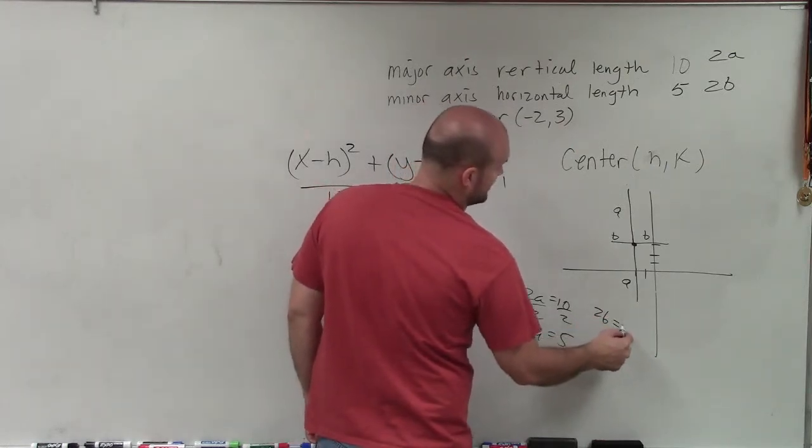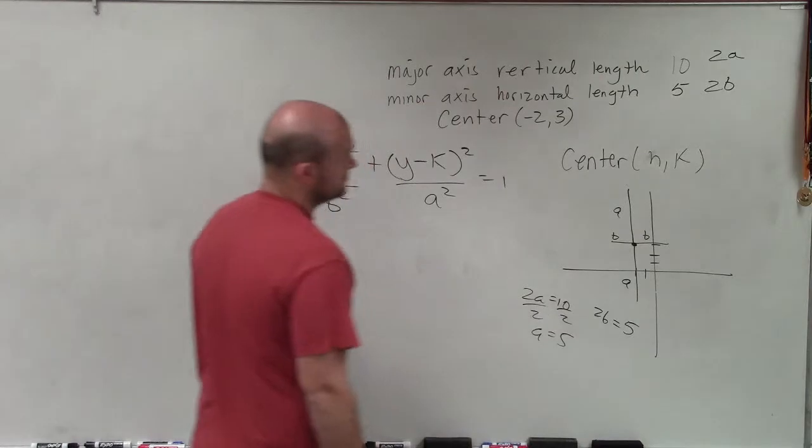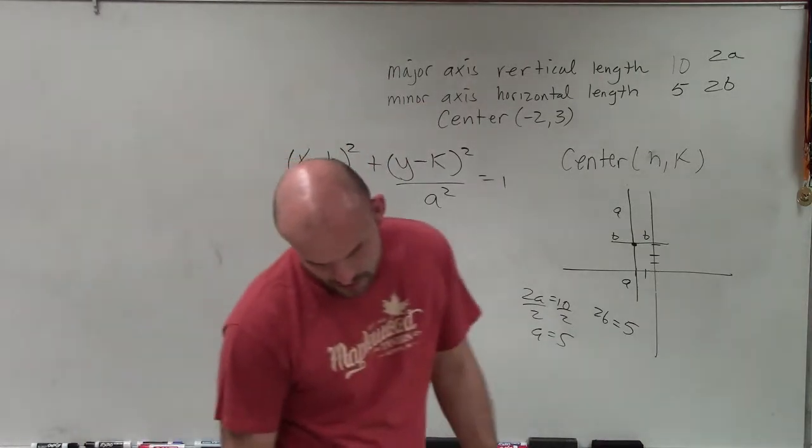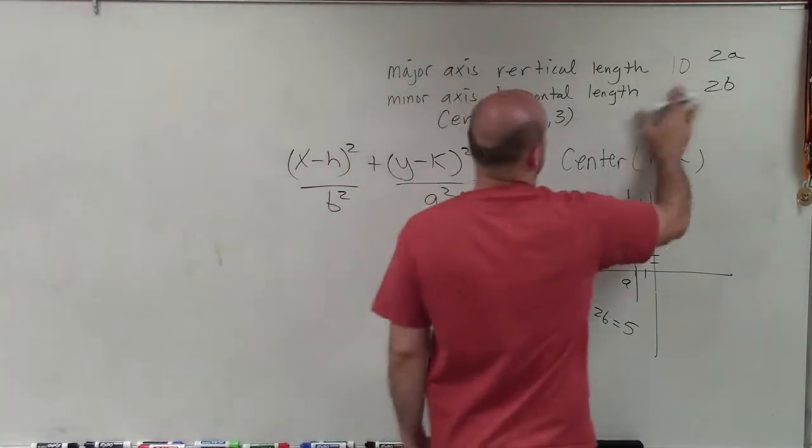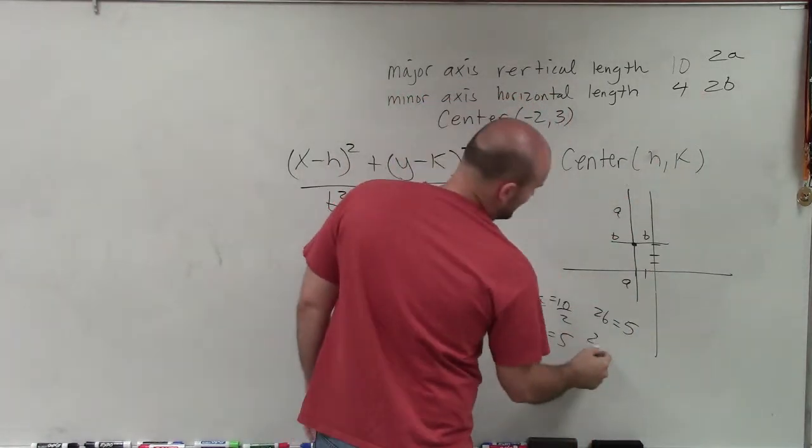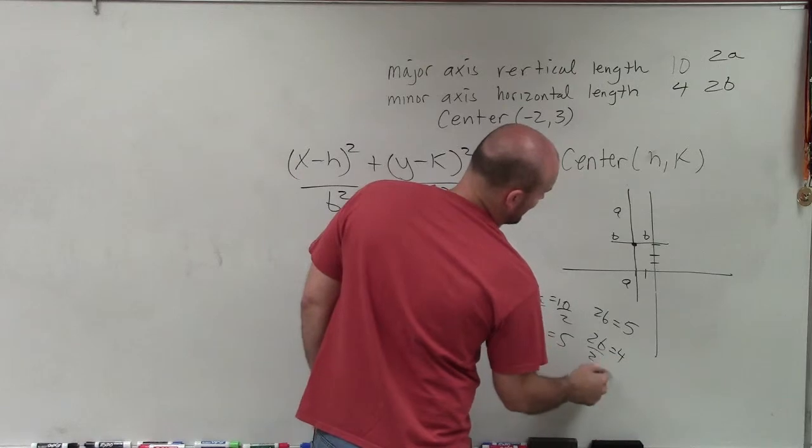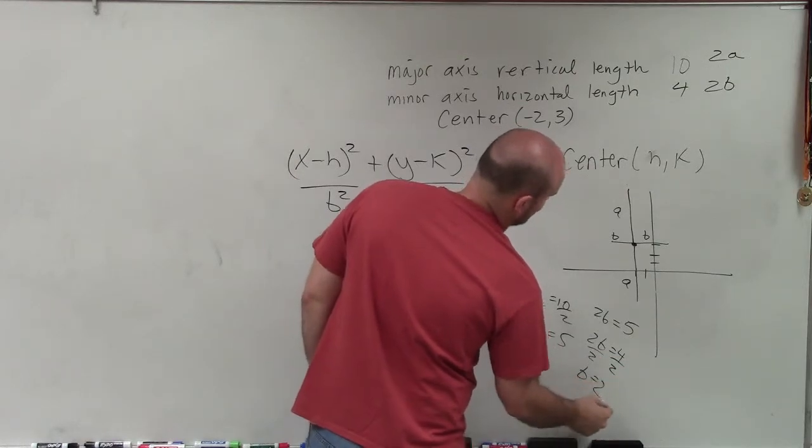And I say 2b equals 5. Oh, I wrote that wrong. That's 4. I was wondering if they wanted fractions. 2b equals 4, divide by 2, B equals 2.